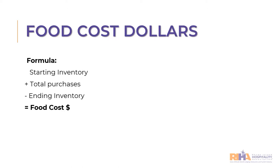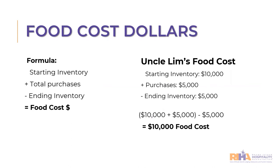Here's an example. Uncle Lim's food cost: starting inventory was $10,000; he purchased $5,000; his ending inventory was $5,000. So add your starting inventory and your purchases, minus your ending inventory — that's going to equal $10,000 in total food cost dollars.